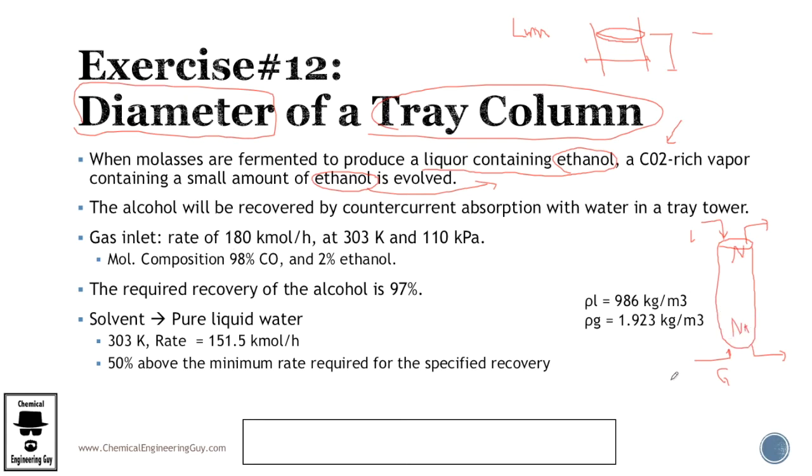Okay, so they tell you at the gas inlet, which is here, your rate is 180 kmol per hour at this temperature and pressure. Molar composition is mostly CO2 and a small amount of ethanol. Remember that the ethanol must be recovered.